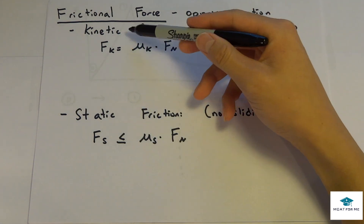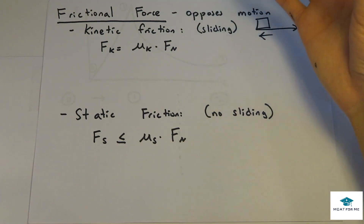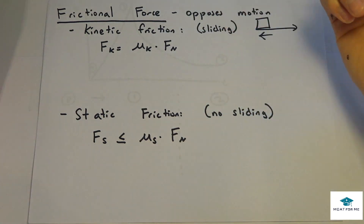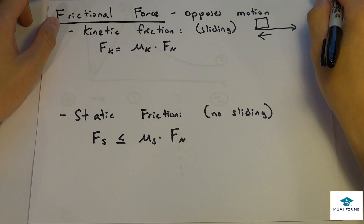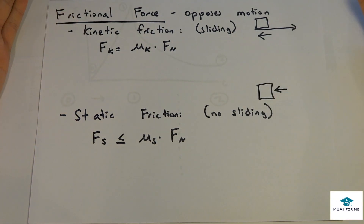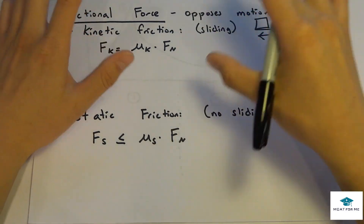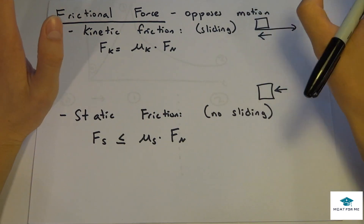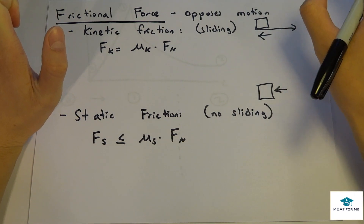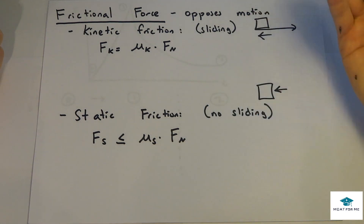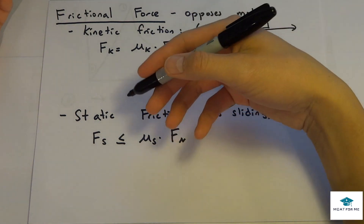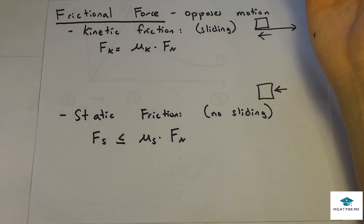There are two types of friction: kinetic and static. Kinetic means sliding — so if an object is sliding on the ground, that has to be kinetic friction. Static friction means no sliding. For example, if you're pushing an object but it's not moving anywhere, that's static friction. If you have a car you're trying to push, initially you'll have static friction because there's no sliding, but eventually it turns into kinetic friction because the tires start to spin and move. Simply put, kinetic friction involves motion and static friction involves no motion.